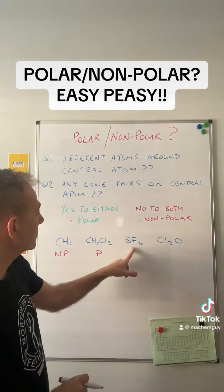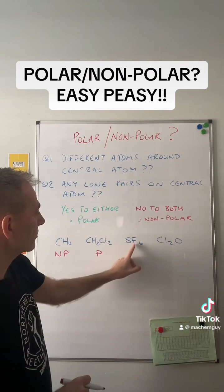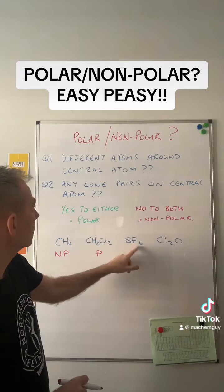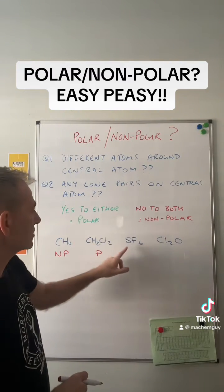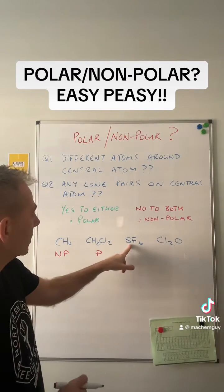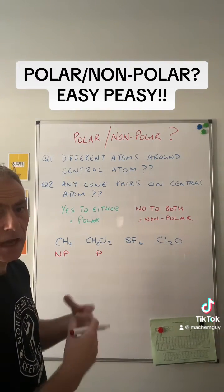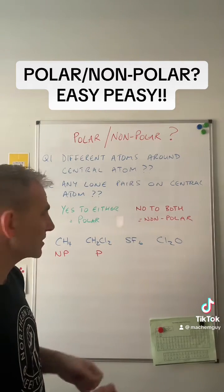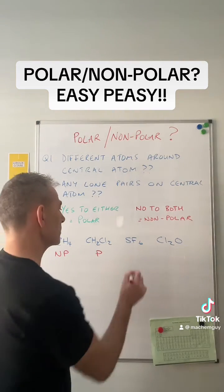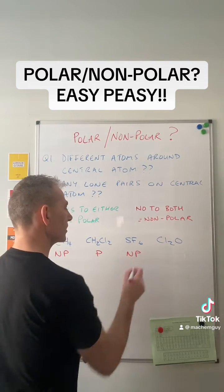SF6. Question one: the answer is no, because they're all fluorine. Question two: it's no again, because sulfur's in group six and it's formed six bonds. So this is a non-polar molecule.